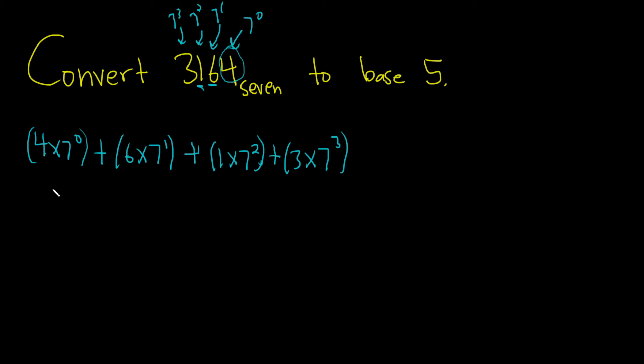So this is going to be, let's see, this is 4, because 7 to the 0 is 1, plus 42, plus 49, plus 1029. So if you plug all of this into your calculator, you get 1124. So this is the base 10 form of this number, which is in base 7.